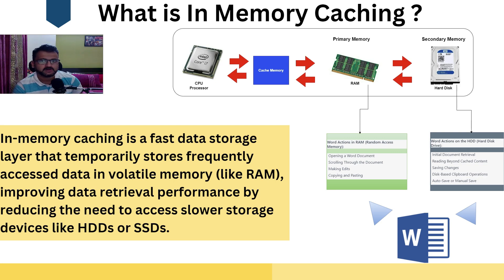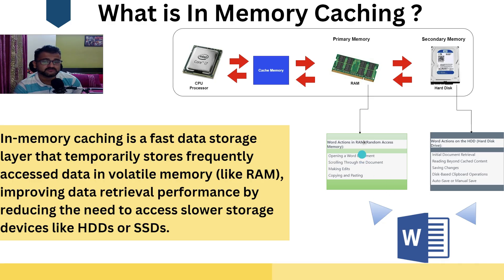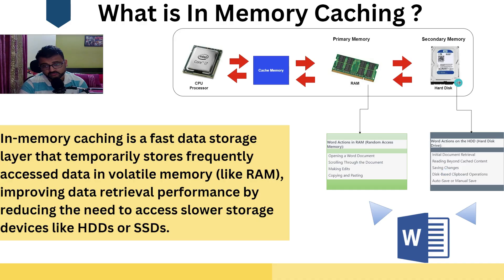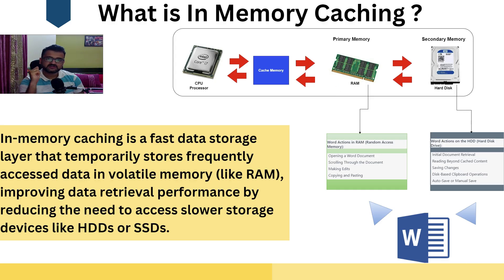There is a lot of memory at the RAM level that we're not always aware of. For example, when we open a Word document, certain actions are done through RAM. Retrieving a document goes through the hard disk, saving goes to the hard disk. But scrolling through a document, copying and pasting — that happens at the RAM level. RAM is not big, but it is really fast.